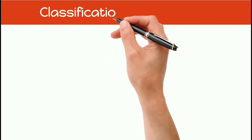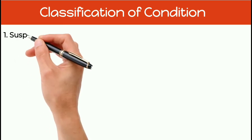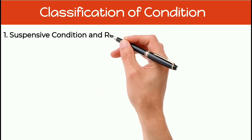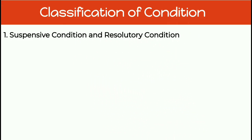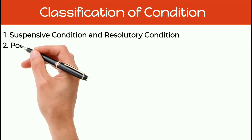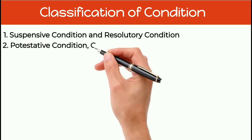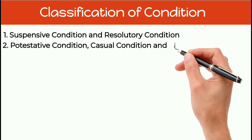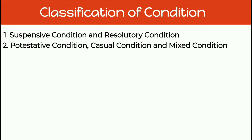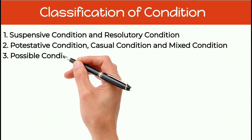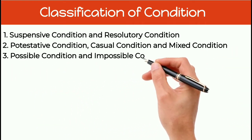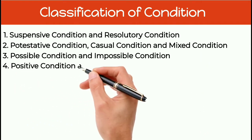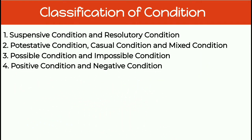Next, let's proceed to the classification of condition. Condition is classified into the following: first, suspensive condition and resolutory condition; second, potestative condition, casual condition, and mixed condition; third, possible condition and impossible condition; fourth, positive condition and negative condition.